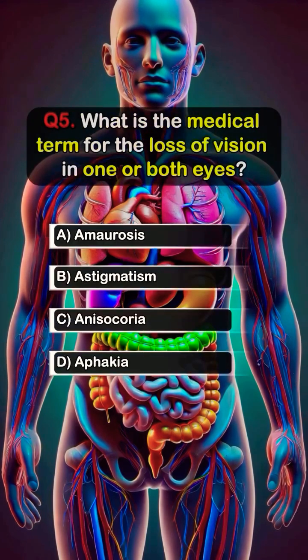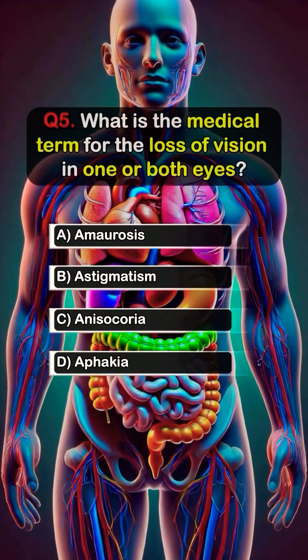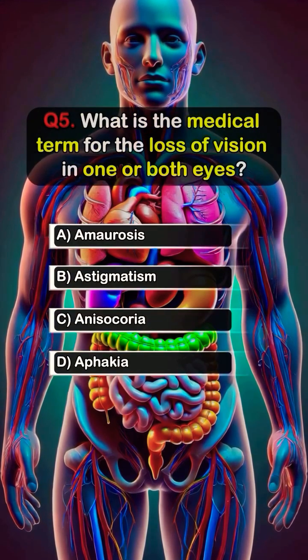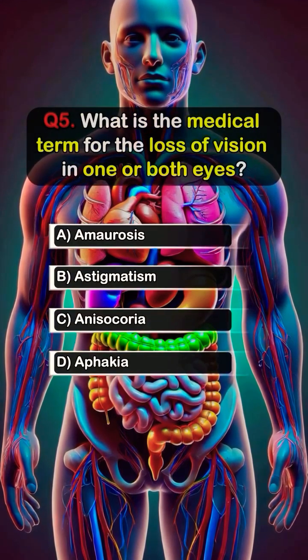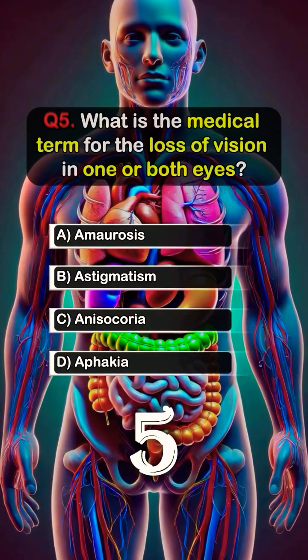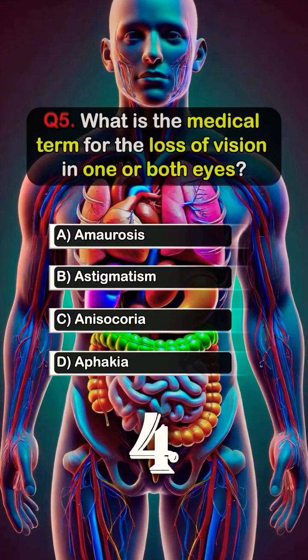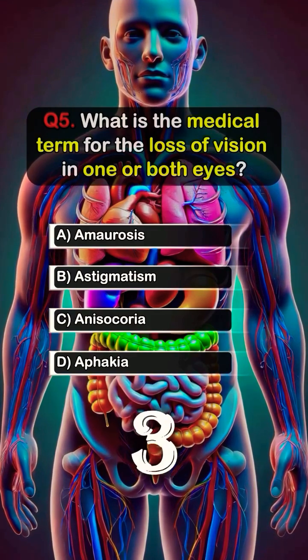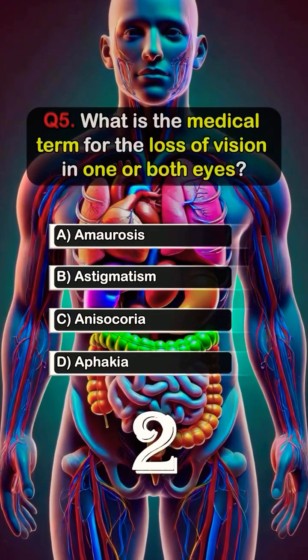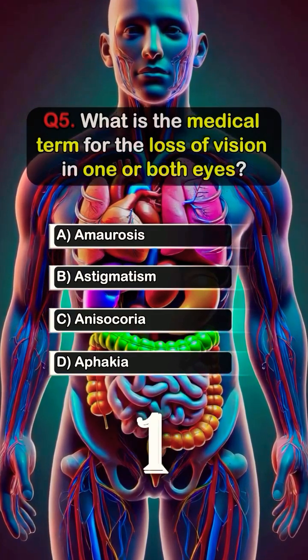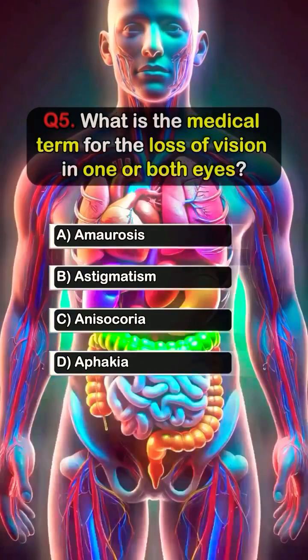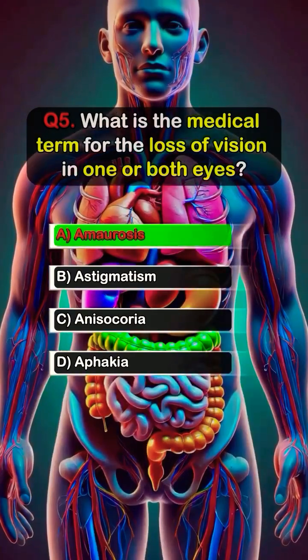Question 5. What is the medical term for the loss of vision in one or both eyes? Answer A. Ammo.